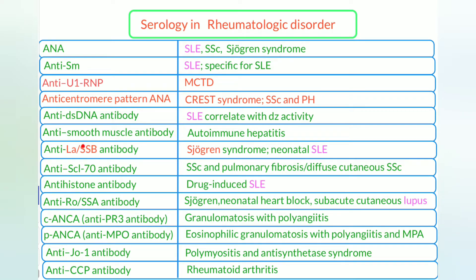Anti-La SSB antibody is for Sjögren's syndrome. Note that SSB stands for a protein. Anti-SCL70 antibody is for systemic sclerosis and pulmonary fibrosis. Anti-histone antibody is for drug-induced SLE.